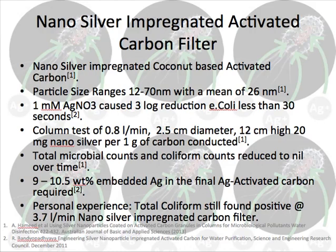In my personal experience, I have used nanosilver-impregnated granular carbon for point-of-use applications. However, it showed very different results from the research findings. Total coliform was still found to be positive at a 3.7 liter per minute flow rate. The nanosilver carbon filter I used was a 10-inch column filter. This could be due to improper sample-taking procedure, and also the amount and particle size of the nanosilver for the filter were not specified by the manufacturer.